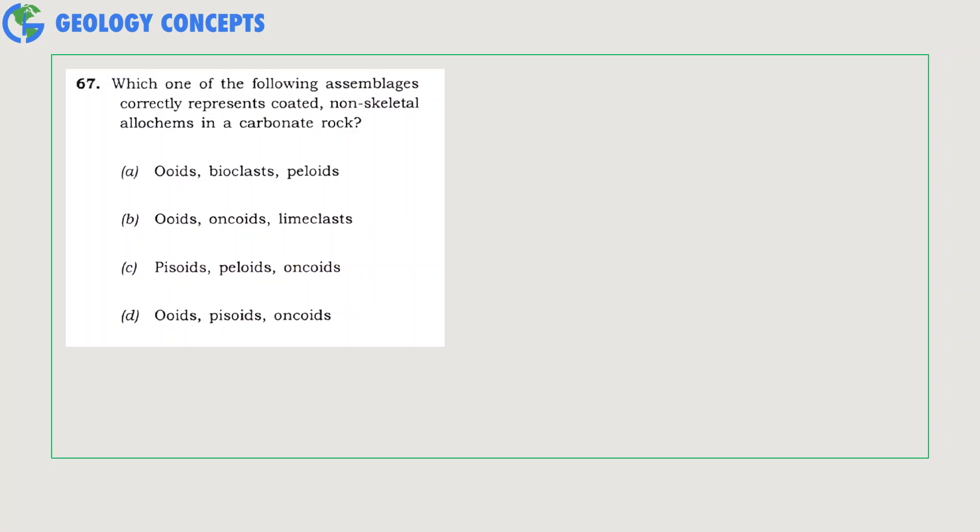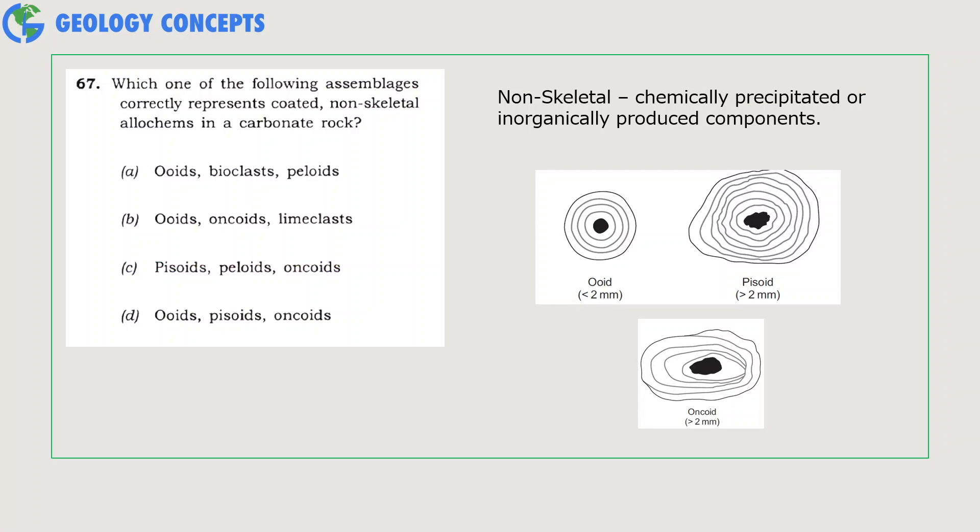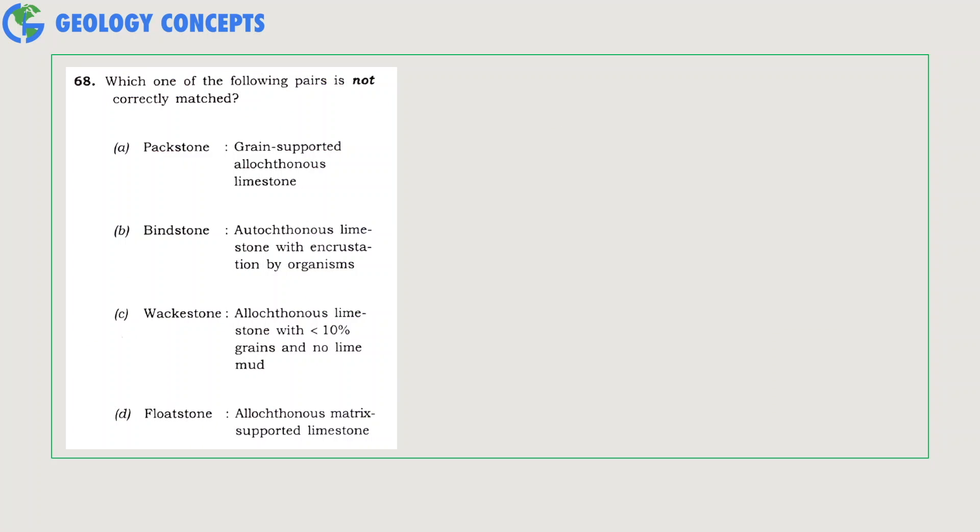Which one of the following assemblage correctly represents coated non-skeletal allochems in a carbonate rock? Non-skeletal means chemically precipitated or inorganically produced components, and coated means the material is precipitated around the nucleus. As you can see from the figure, ooids, pisoids, and oncoids are characteristic. Hence, option D is the right answer.